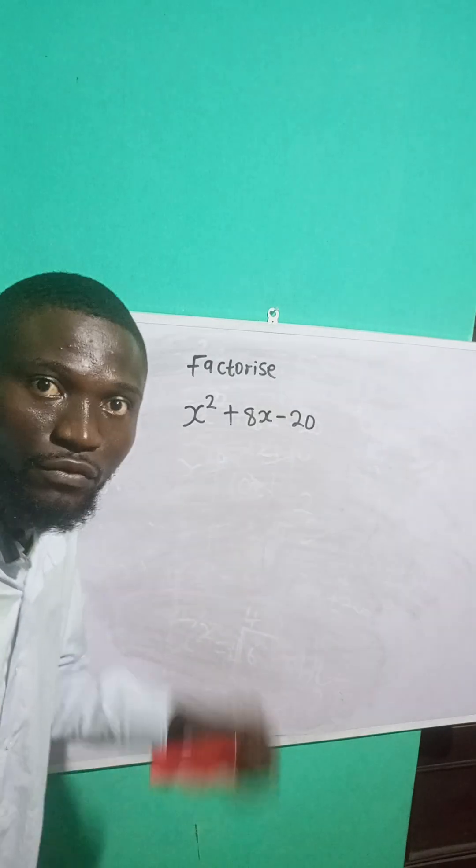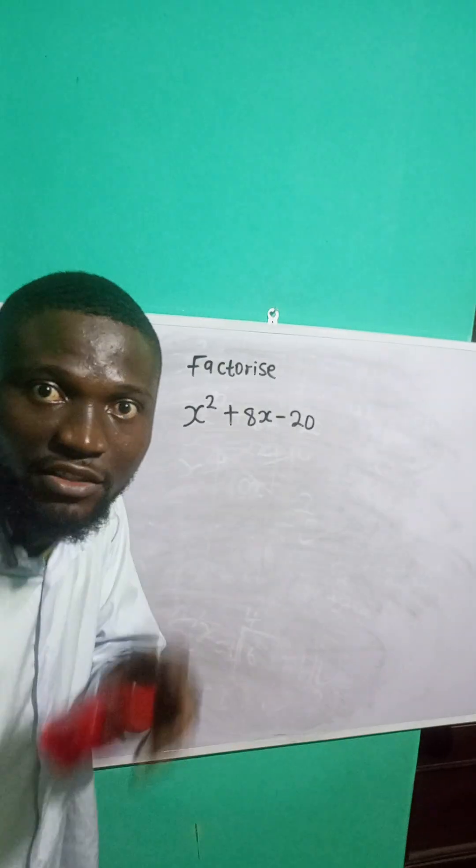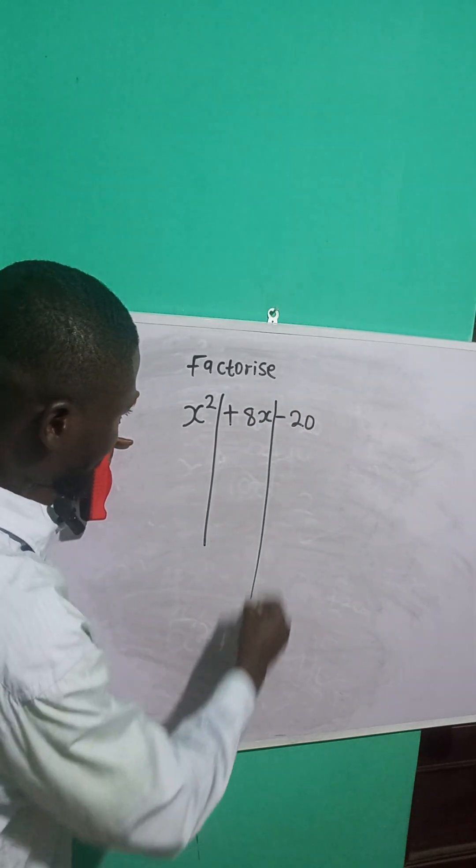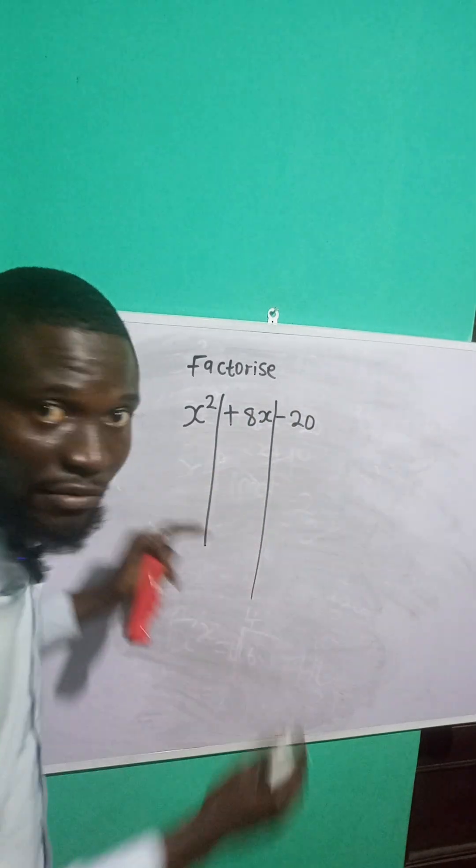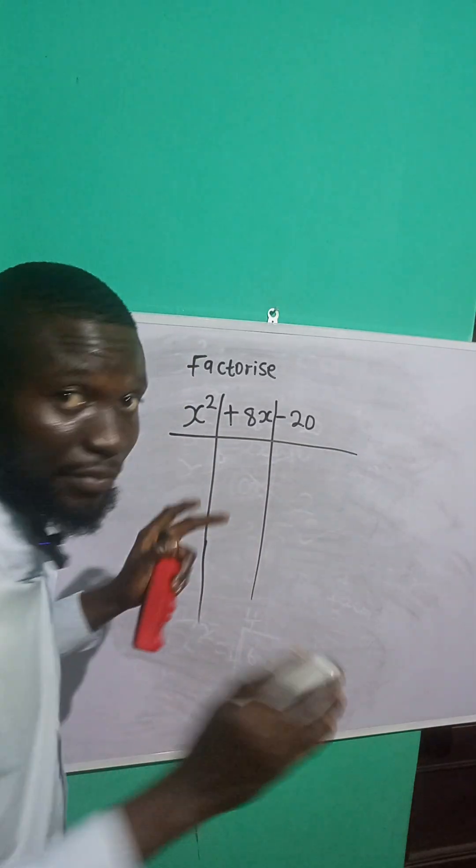So let me show you the first way that you can use to factorize quadratic equation. What you are going to do is to separate all the terms. So separate this one, separate this. You can see I've separated all the terms. I want them to stand alone. So I've separated them.